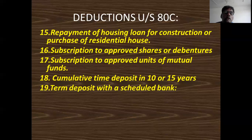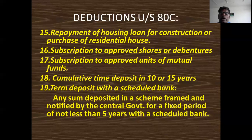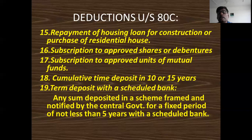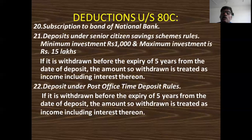The nineteenth item is term deposit (fixed deposit) with a scheduled bank for more than five years. More than five years is eligible; less than five years is not eligible. Note: this is not limited to nationalized banks. All nationalized banks are scheduled banks, but not all scheduled banks are nationalized banks — remember this.